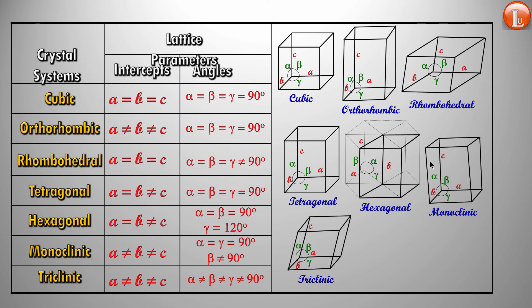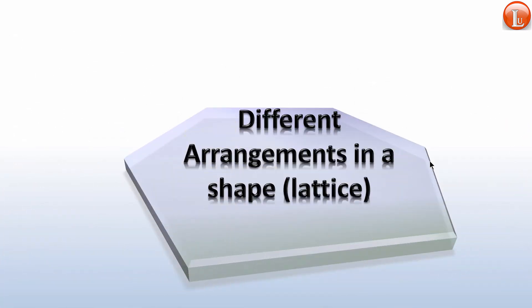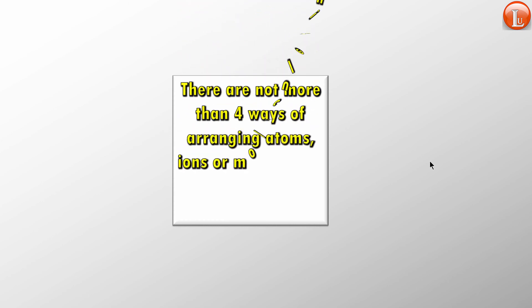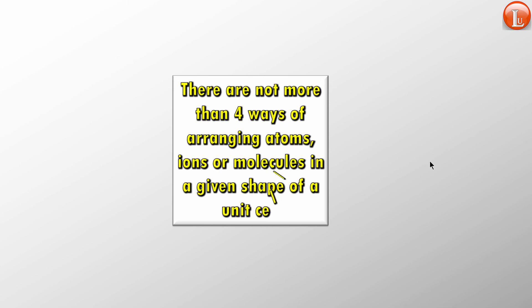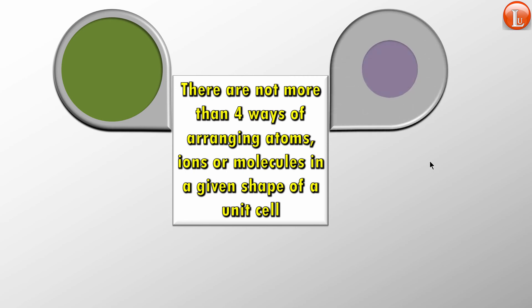You have to remember these cell parameters to understand each of these shapes. Now let us understand how atoms are arranged in these particular shapes. These arrangements are called lattice. Based on symmetry considerations, it has been found that there cannot be more than four ways of arranging atoms, ions, or molecules in any given shape. No shape can have more than four arrangements, and till date, millions of unit cells have been observed and none of them violate this rule.